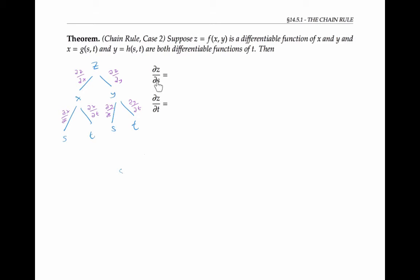Now to find dz/ds, I just need to follow the branches of the tree that end in the variable s. That gives me the formula partial z partial s is partial z partial x times partial x partial s plus partial z partial y times partial y partial s. A similar formula for partial z partial t can be found by following the branches that end in the variable t.